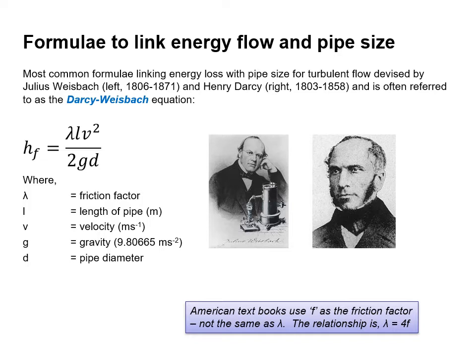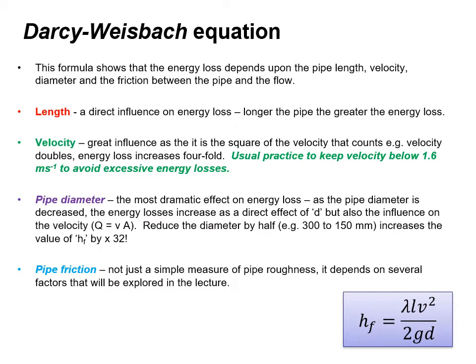H subscript F is equal to the friction factor multiplied by the length of the pipe, multiplied by the velocity squared, divided by 2 times gravity times the diameter of the pipe. As a word of caution, American textbooks use the term F as a friction factor, and that's not the same as lambda — the relationship is lambda equals 4F. The Darcy-Weisbach equation shows that energy loss depends upon the pipe length, the velocity of the liquid, the diameter of the pipe, and the friction between the pipe and the flow itself.